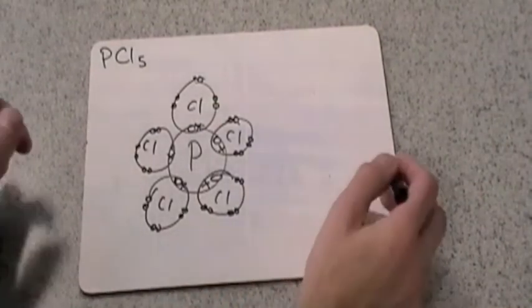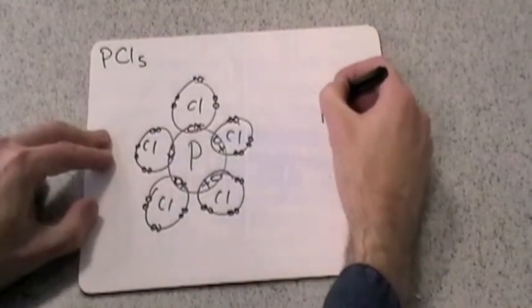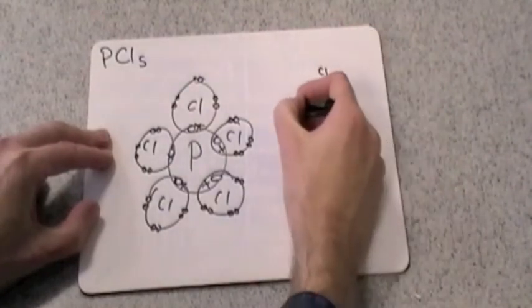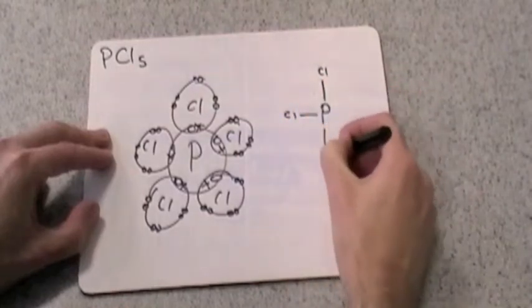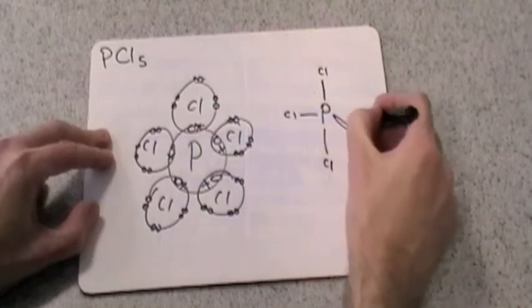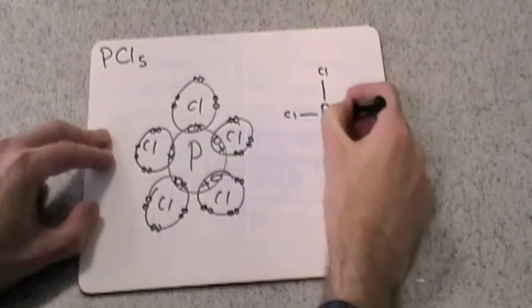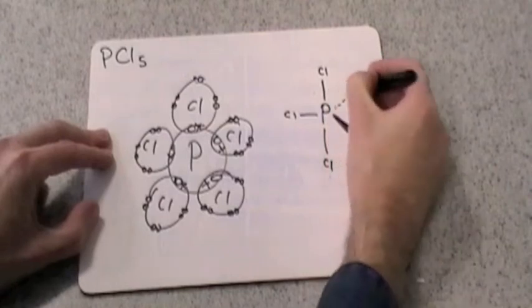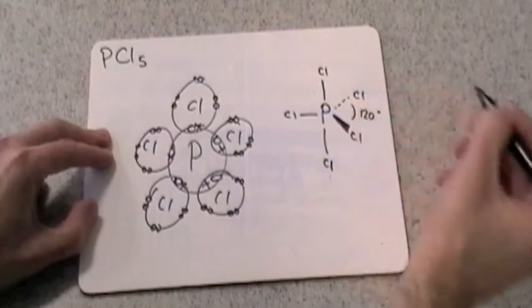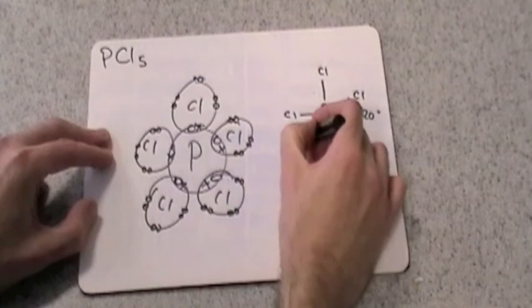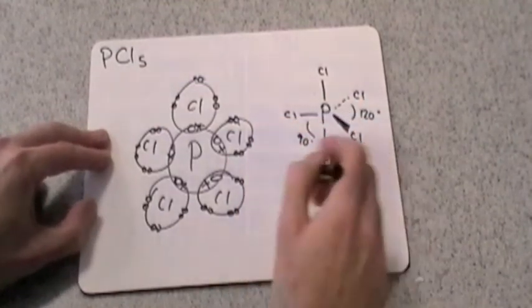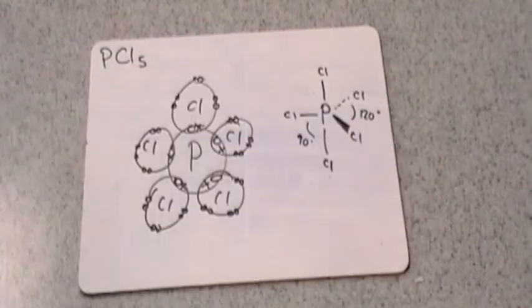So let's draw that central phosphorus atom. Straight up. So straight across to the left. Straight down. We've got one sticking out of the board. Do that as a shaded wedge. And one going back. Bond angle 120 around the middle, and 90 degrees between this horizontal one and the vertical. And it's a trigonal bipyramid.